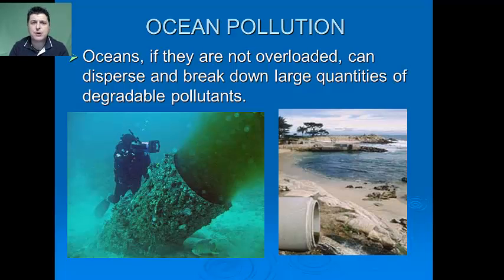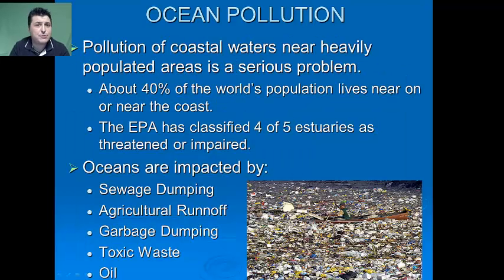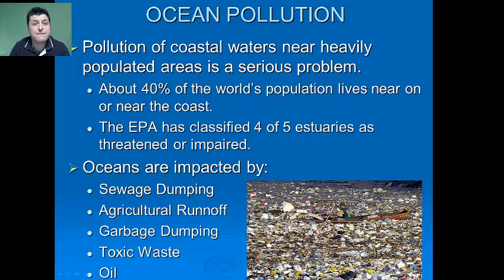Despite its great volume, the ocean is also at risk for pollution. As long as they're not overloaded, oceans can disperse and break down many degradable pollutants, but many people treat the ocean as a dumping ground. Most pollution happens near the coast because that's where most of the population and development is — about 40% of the world's population lives near or on the coast. The EPA has classified 4 out of 5 estuaries as threatened or impaired. Major ocean pollutants include sewage dumping, agriculture runoff, garbage dumping, toxic waste, and oil.